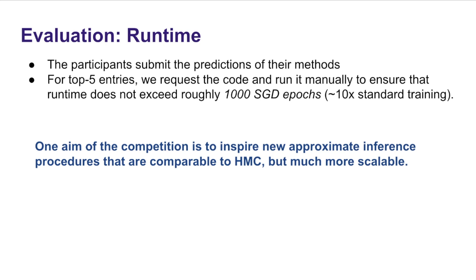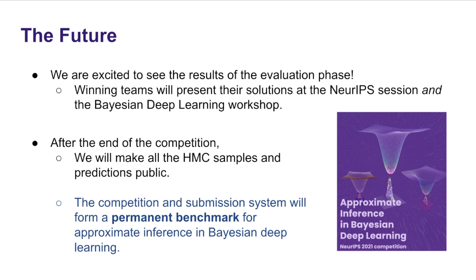One of the aims of the competition is to inspire new approximate inference procedures that are comparable to HMC but much more scalable. For the top five entries, we'll request code and run it manually to ensure that the runtime doesn't exceed roughly a thousand SGD epochs, which is about 10 times the standard training budget. We're excited to see the results of the evaluation phase. Winning teams will present their solutions at the NeurIPS competition track as well as the NeurIPS Bayesian deep learning workshop. After the competition ends, we'll make all HMC samples and predictions public, and the competition and submission system will form a permanent benchmark for approximate inference in Bayesian deep learning. We're looking forward to seeing all the submissions and meeting you at the competition track. Thank you.